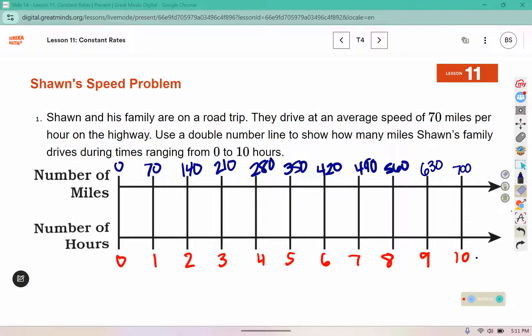Part A asks us how far they will go in 8½ hours. That's in between 8 and 9 hours. So we could figure out what's in between 560 and 630. It might be helpful to think about how far they would go in a half of an hour. In one hour they go 70 miles, so in half of an hour, half of 70 is 35. So 560 plus 35 will tell us how far they go in 8½ hours, which is 595 miles.